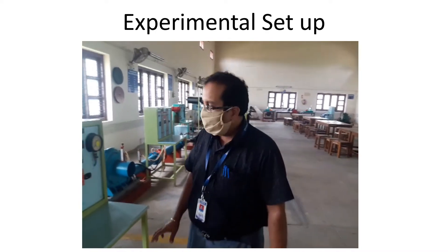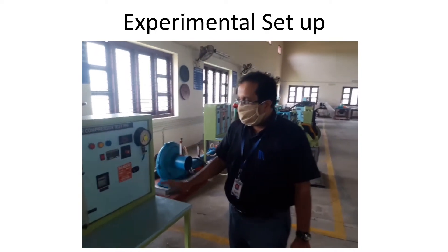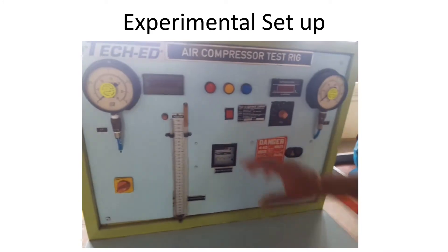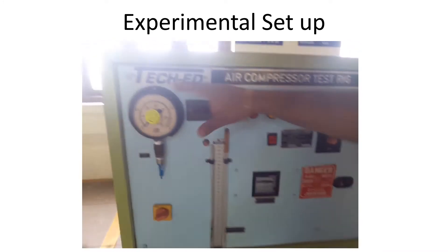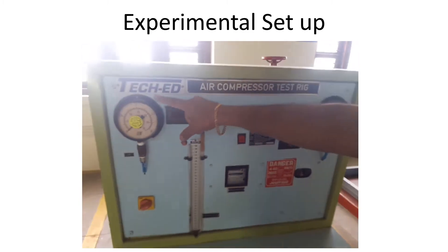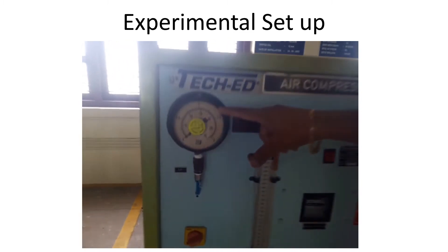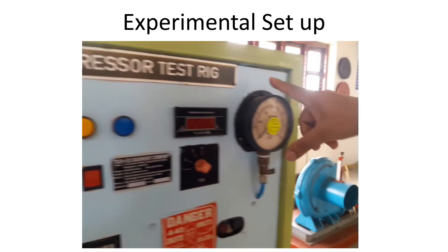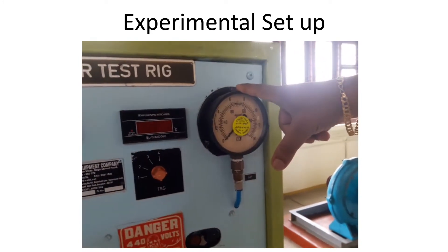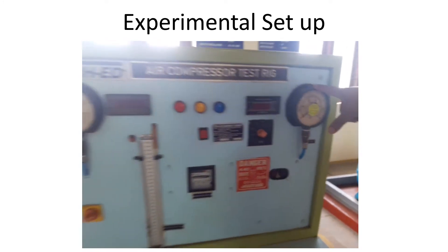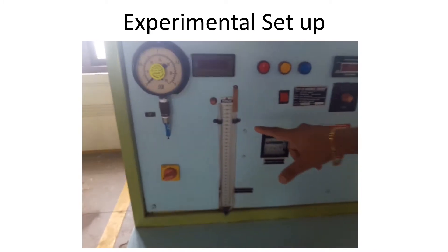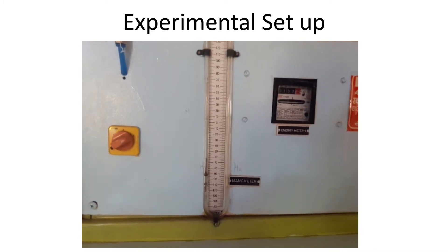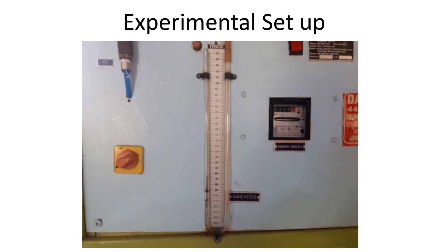Here is the experimental setup of the air compressor test rig. You can see that there exist two pressure gauges. One is used for checking the pressure of the low pressure cylinder, and the other is used for checking the pressure of the high pressure cylinder. There is also a water manometer, which is used to find out how much air has entered into the low pressure cylinder.